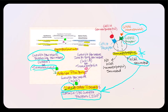Growth hormone-inhibiting hormone, GHIH, another hypothalamic hormone also referred to as somatostatin, upon binding to its receptor on the somatotrope, will prevent the somatotrope from secreting growth hormone.